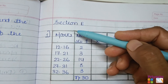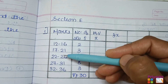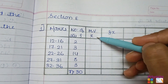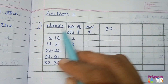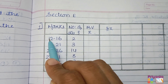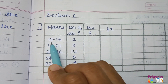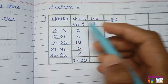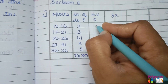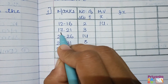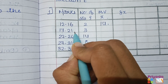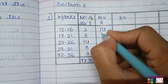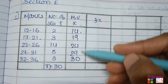First, take the information into a table. Since it is given as a continuous frequency distribution, we first have to find the mid value. To find the mid value, take your calculator, type 12 plus 16 and divide by 2 — you will get 14. Next, 17 plus 21 divide by 2, you will get 19.